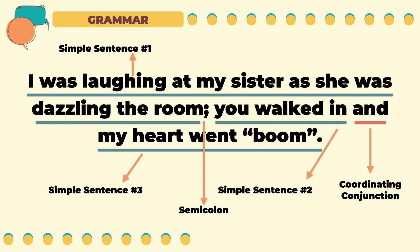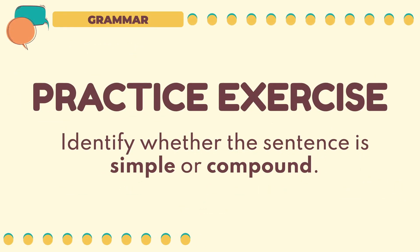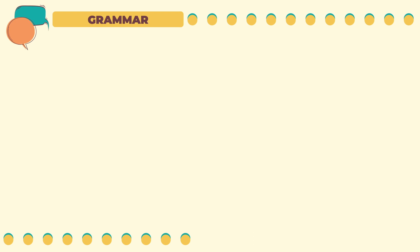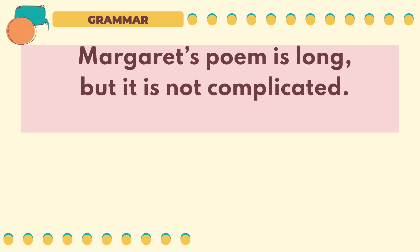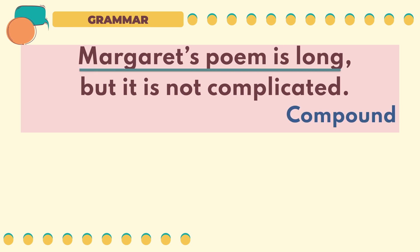We are now done with our discussion on simple and compound sentences. Let's have a practice exercise to apply what we have learned. Identify whether the sentence is simple or compound. Pause this video as you try to answer the given sample sentences. First sentence: 'Margaret's poem is long, but it is not complicated.' This sentence is a compound sentence. It has two simple sentences — 'Margaret's poem is long' and 'it is not complicated' — joined by the coordinating conjunction 'but.'